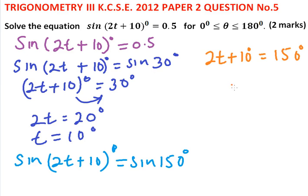We take 10 to the other side, and 2t = 140°. So t = 70°.